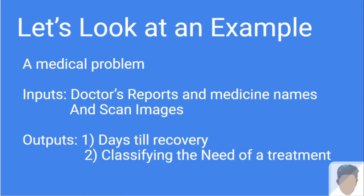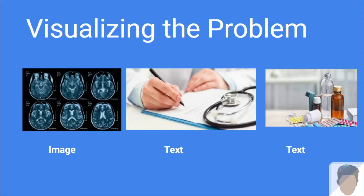Here I am presenting a hypothetical medical problem. Think that the inputs are doctor's reports, medicine names, and scanned images. The outputs you need are days till recovery and classifying the kind of treatment a patient should get, based on understanding data from previous patient histories. We have an image input, text inputs, and another text input. This can't be done with sequential models, because sequential models either pass an image and get a classification or a value — but here we have image and text inputs plus two outputs to handle.